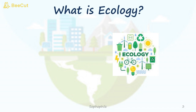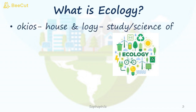So what do you mean by ecology? Ecology comes from the words 'oikos' plus 'logi'. Oikos literally means house and logi means the study or the science of. So ecology means the study of house. Now here house doesn't only mean our house that we live in, but house here means the entire environment around us.